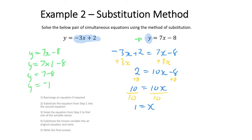So the solution to the set of simultaneous equations — the point of intersection — is x equals one, y equals negative one. We can write that as the final answer: coordinates (1, −1). That is an example of how to solve a set of simultaneous equations using the substitution method.